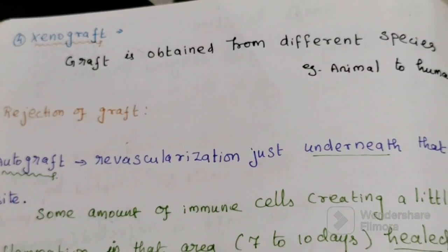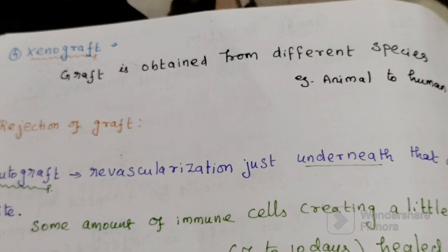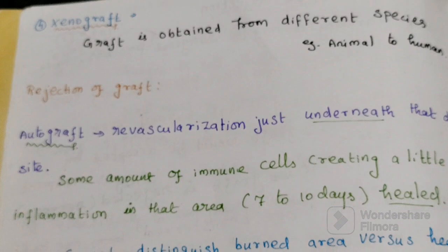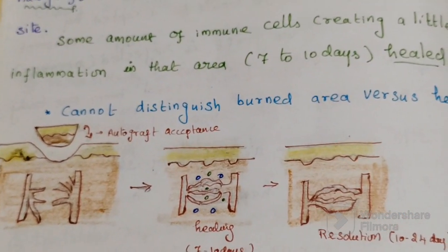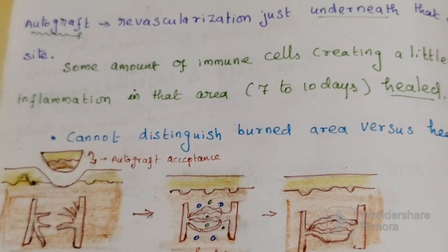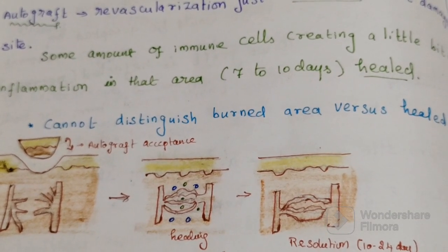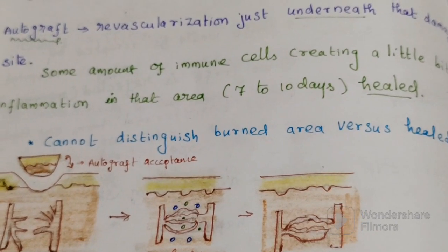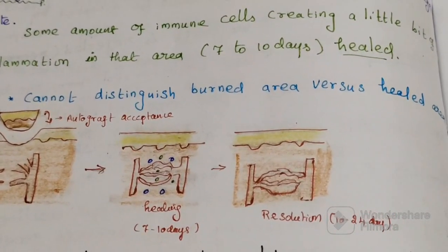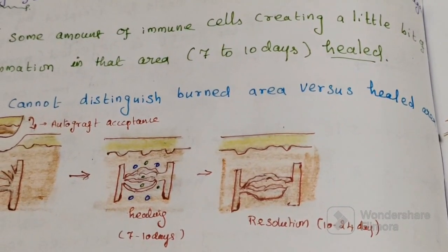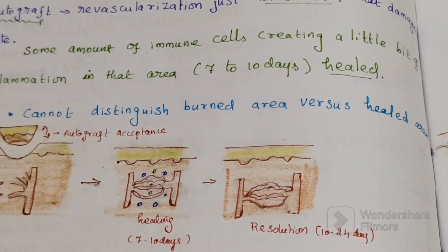Let's take a specific example: a portion of skin is burned and we need to graft a skin tissue to repair it. When an autograft is given to that burn site, there would be revascularization just underneath the damaged site, along with some immune cell activity creating a little bit of inflammation in that area. But over time, in a course of 7 to 10 days, that portion would be healed, and you cannot distinguish between the burned area versus the healed area.